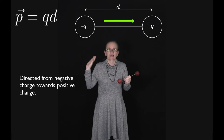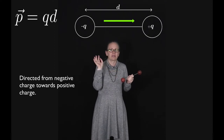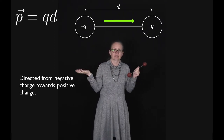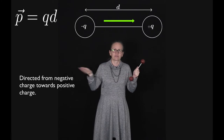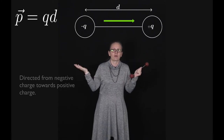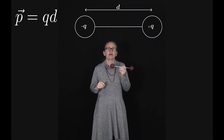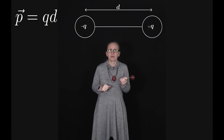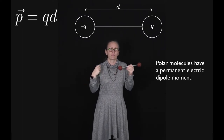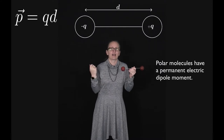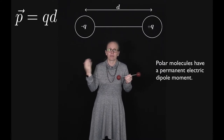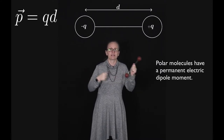Just be careful not to confuse this p with the p we use for momentum — unfortunately physicists don't always choose different letters for everything. Now, electric dipole moments can be permanent or induced. Polar molecules have a permanent dipole moment because they have a positive end and a negative end.